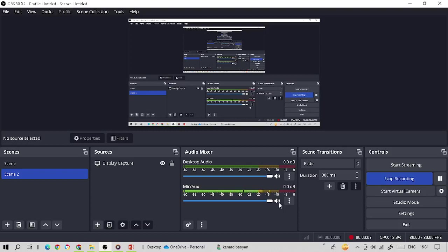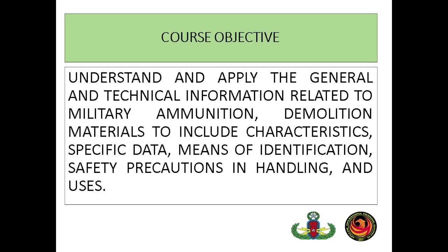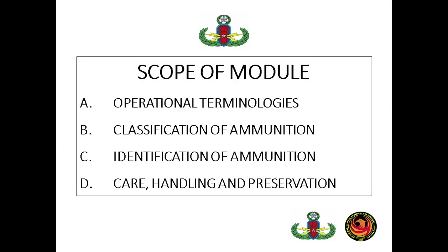Ladies and gentlemen, last meeting we were done with types of explosives and its effects. We will now be dealing with ammunition — reviewing the types of ammunition. The first objective is to understand and apply the general and technical information related to military ammunition and demolition materials, to include characteristics, specific data, means of identification, safety precautions in handling, and uses. The scope of the module includes operational terminologies, classification, identification, care, handling, and preservation of ammunition.